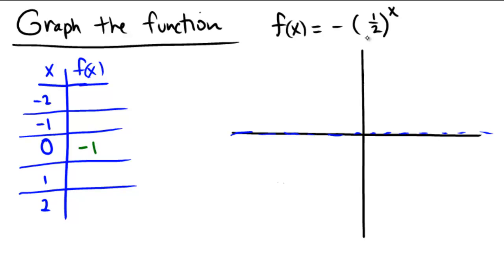Raised to the power of 1, let's see, plug in 1. 1 half to the 1 is 1 half, and it's got a negative, so I'll put negative 1 half there. And then with the 2, 1 half squared, or 1 half times 1 half is 1 fourth. So I get a negative 1 fourth.